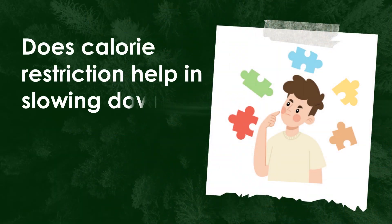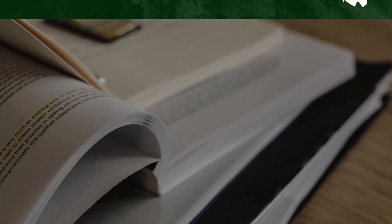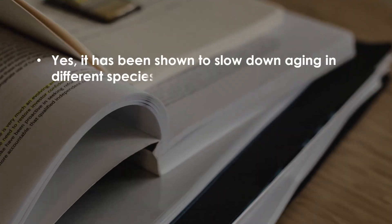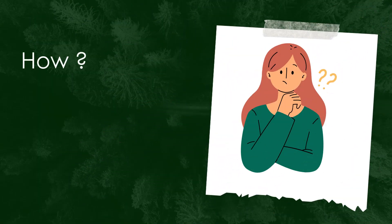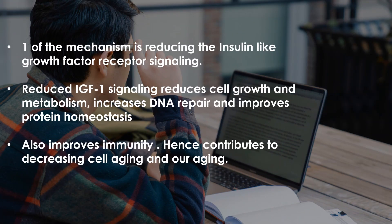Does calorie restriction help in slowing down aging and prolonging life? Yes, it has been shown to slow down aging in different species, from flies to mice. One mechanism is reducing the insulin-like growth factor receptor signaling. Reduced IGF-1 signaling reduces cell growth and metabolism, increases DNA repair, improves protein homeostasis, and also improves immunity — hence contributing to decreasing cell aging. That's all for today. If you like the video, please like, share, and subscribe. This is Dr. Bismay signing out.